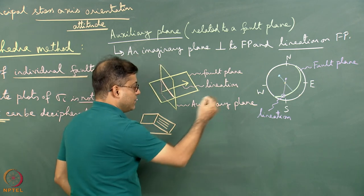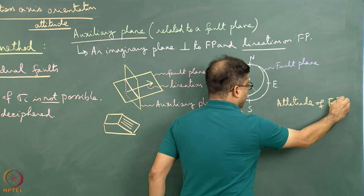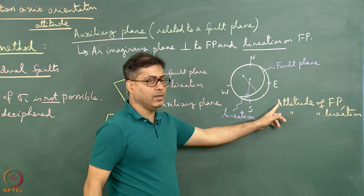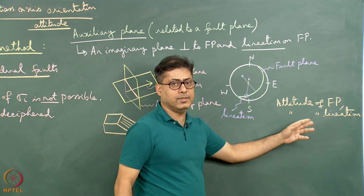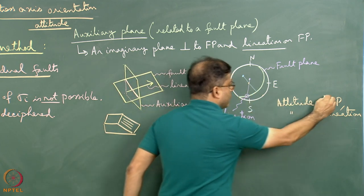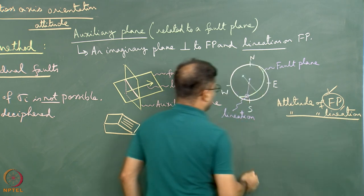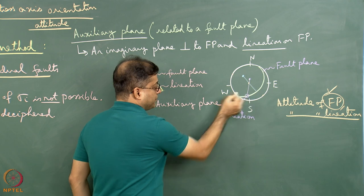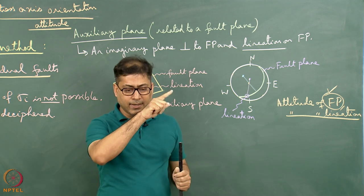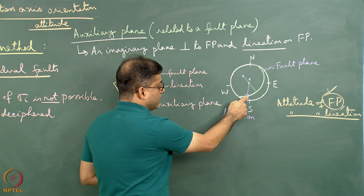For stereographic plotting we know the attitude of the fault plane — its strike, dip, and dip direction — and the attitude of the lineation — its plunge and trend. The green great circle on the stereonet represents the plotted fault plane. From the attitude of the lineation, the lineation plots as a point on that fault plane great circle, since the lineation is developed on the fault plane.